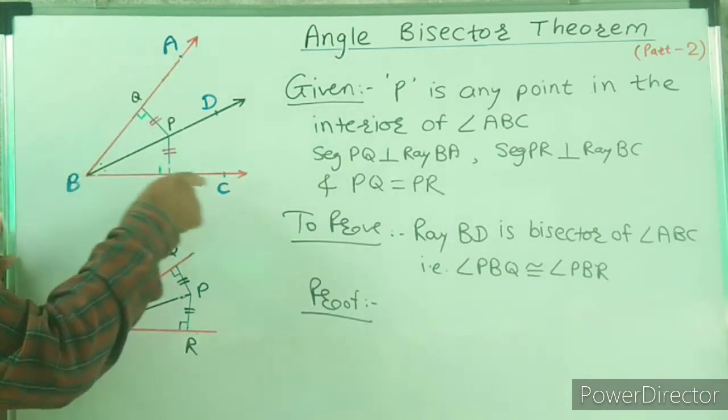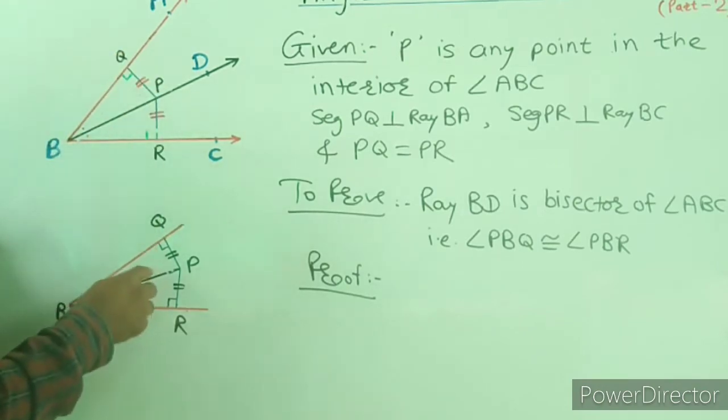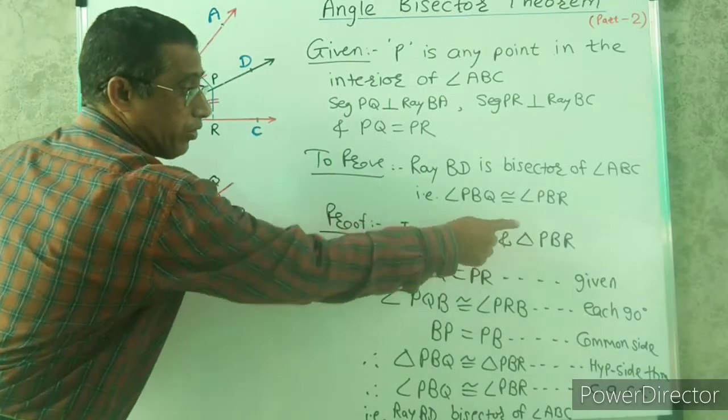In this figure we can see these two triangles PBQ and PBR. Now prove that triangles PBQ and PBR are congruent.